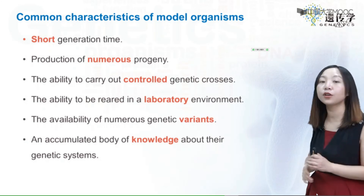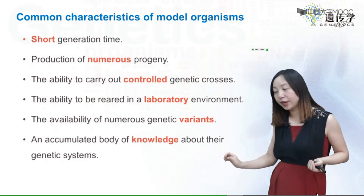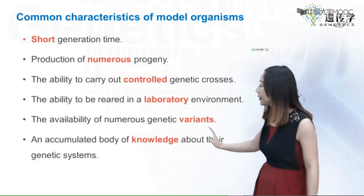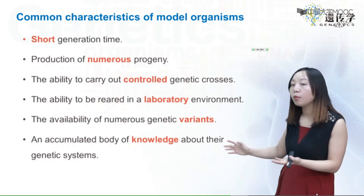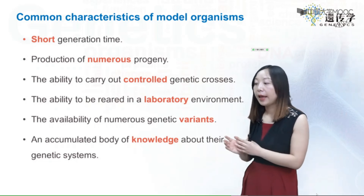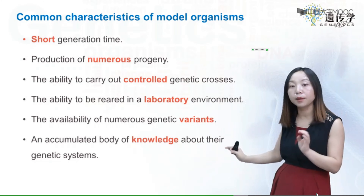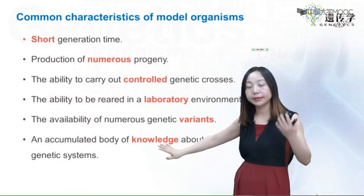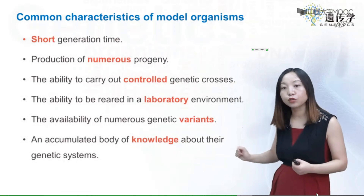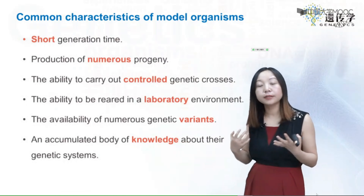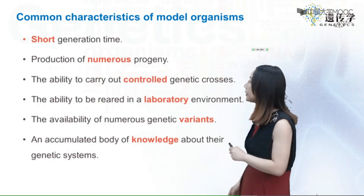Finally, there should be an accumulated body of knowledge about the organism's genetic system — knowledge of chromosome composition, such as how many chromosomes are in one cell. Ideally, we should have the genome sequence of these organisms, as this knowledge facilitates their use in genetic studies.